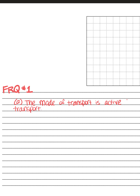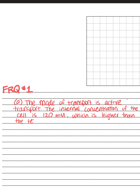We're not quite done with Part A — it does ask us to explain how we know using the data. The internal concentration of the cell is 120 millimolar, which is higher than the test concentrations outside of the cell.